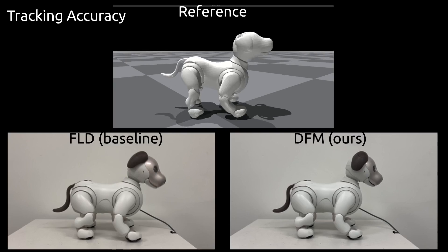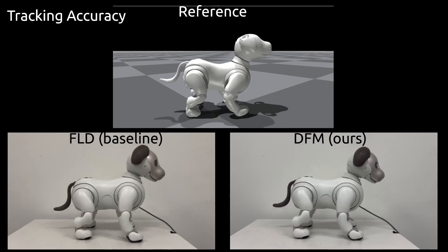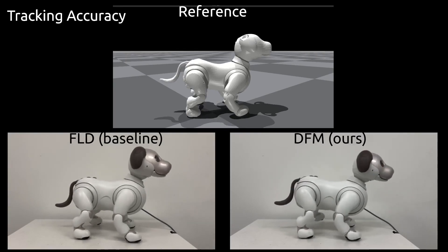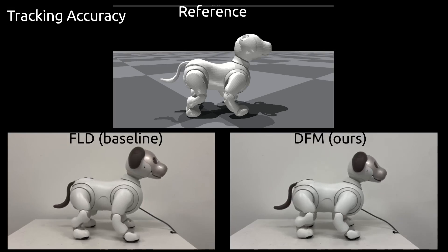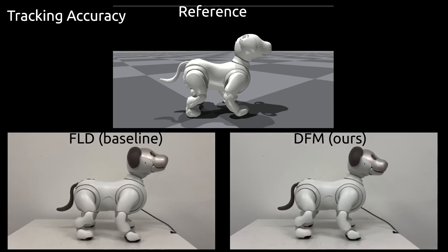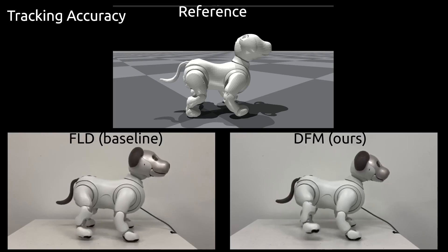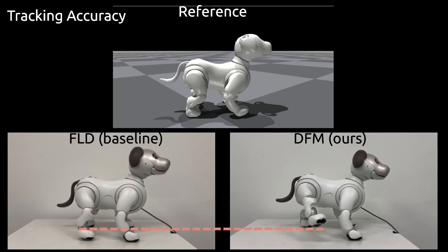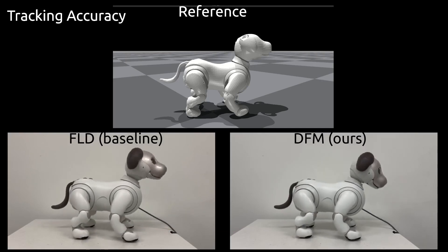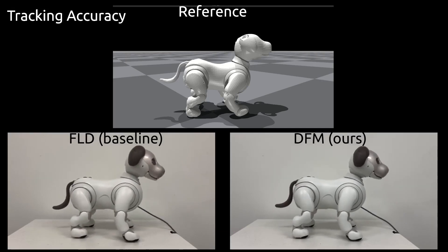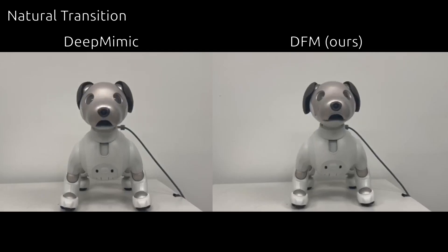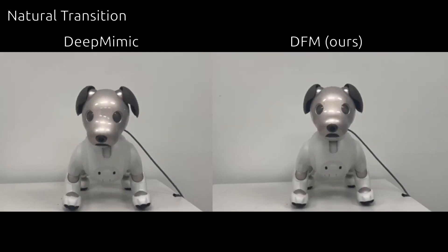We compare our method with Fourier Latent Dynamics as a baseline. Due to strong periodic assumptions in both motion representation and reinforcement learning, FLD overly smooths out reference motions. DFM, which relaxes the strong periodic assumption, results in moving up the rear leg by tracking the reference motion details more accurately.